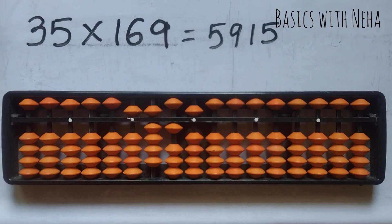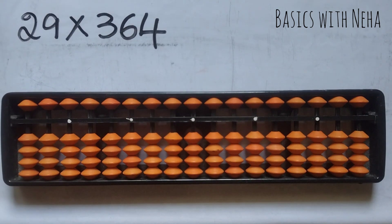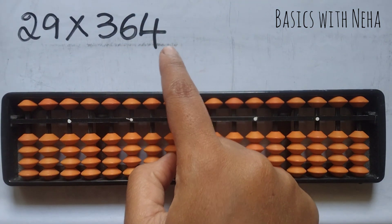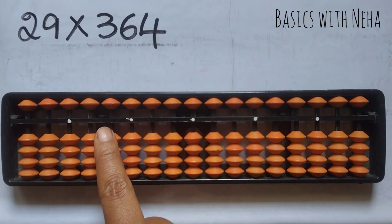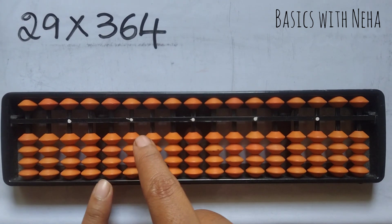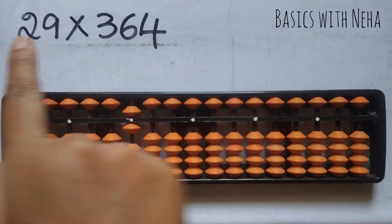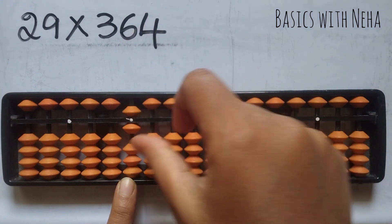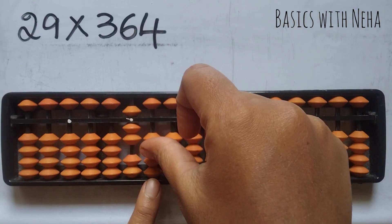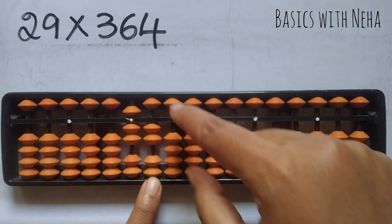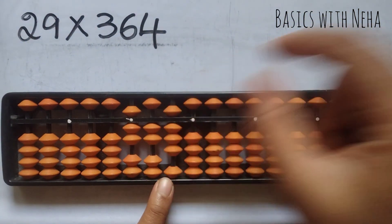The next question: 29 into 364. So 5th rod from the house pointer 1s rod. 2 threes are 6, so it will be 0, 6. 2 sixes are 12 — 1, 2. 2 fours are 8 — 0, 8.